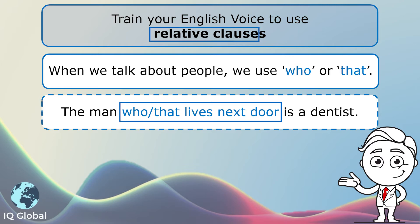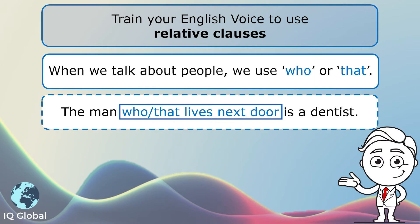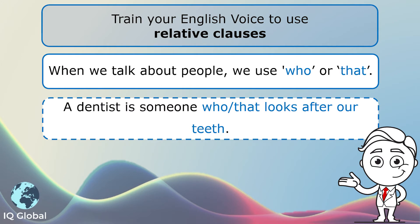This is a relative clause. It is telling us more about the man. Which man is a dentist? The man who lives next door. Sentence two: A dentist is someone who or that looks after our teeth. Once again, we are talking about a person, a dentist, so we can use the word who or that. Both are correct.